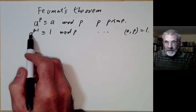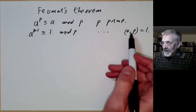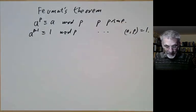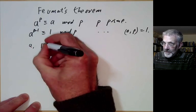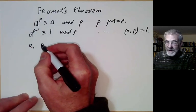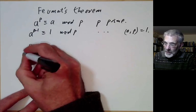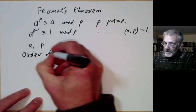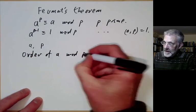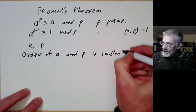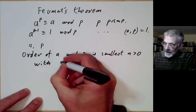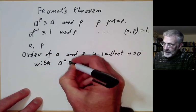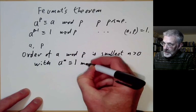So in particular there's some power of a which is congruent to 1 mod p, at least under this condition. More generally, given a number a and a prime p, we say the order of a mod p is the smallest number n greater than 0 with a to the n congruent to 1 modulo p.